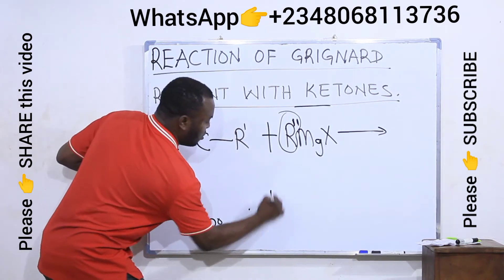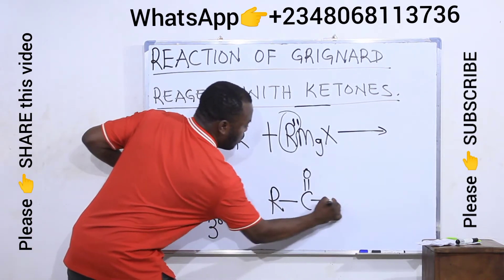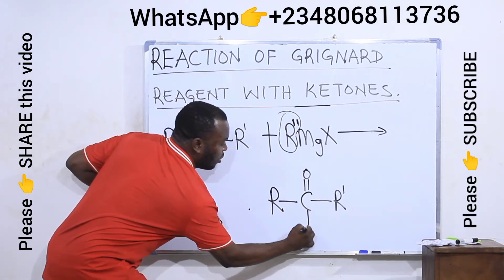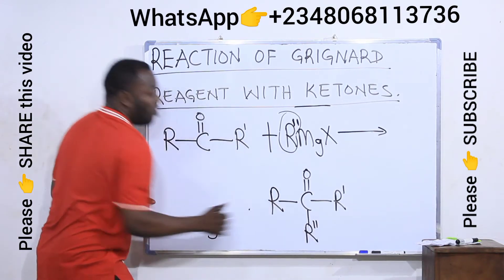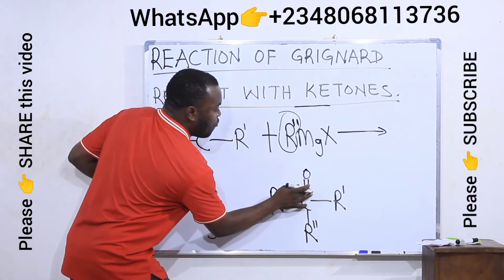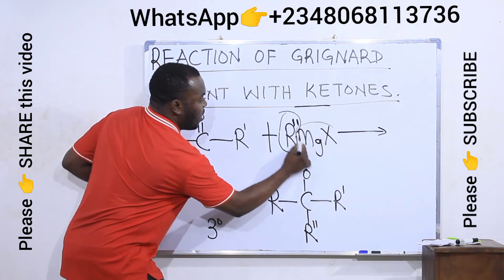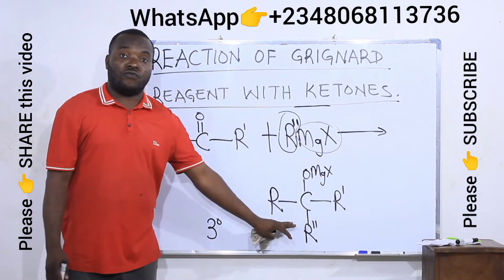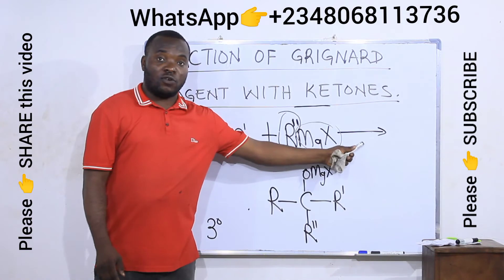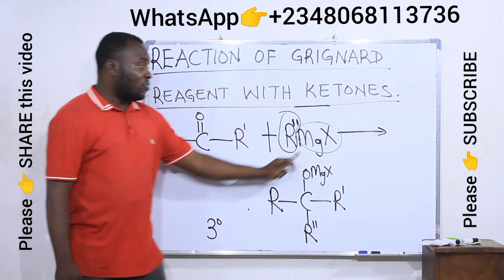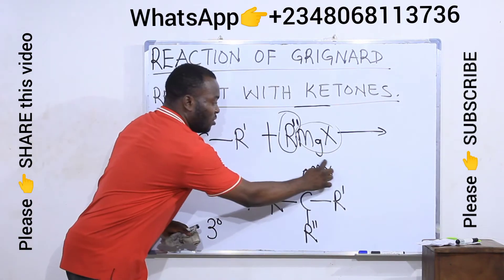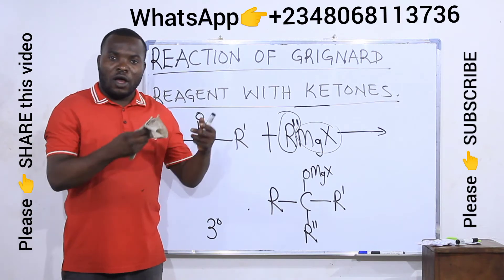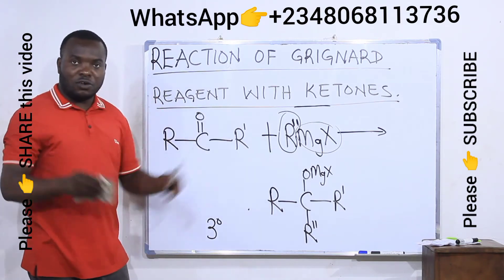Without the acidic medium, disconnect the alkyl group from the Grignard and attach it to the ketone as usual. Then, instead of OH, you remove one bond on the oxygen and attach MgX. This is the intermediate product formed without the acidic medium. But in the presence of the acidic medium, this MgX complex is converted to OH. Now let's see examples of this using real compounds.